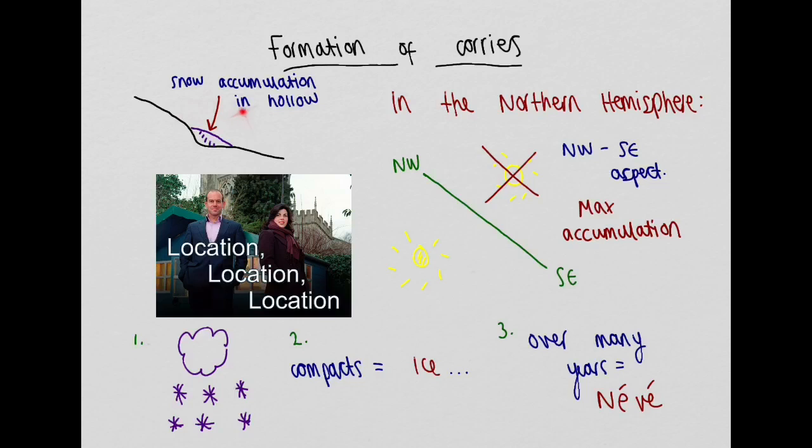Corries form in hollows where snow can accumulate. In the Northern Hemisphere, this tends to be on north-west to south-east facing slopes, which because of their aspect are slightly protected from the sun, which allows snow to lie on the ground for longer and accumulate. It is in these locations that snow accumulation is highest and ablation is lowest.